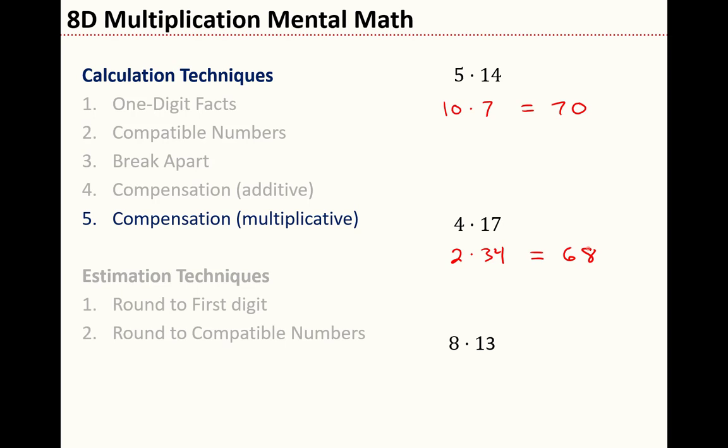Sometimes this halving and doubling process has to go on a couple times. 8 times 13. 4 times 26, which is the same as 2 times 52, and that gives me 104.